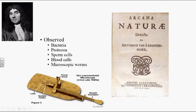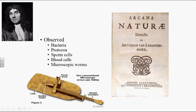That person was Antonie van Leeuwenhoek, a Dutch scientist. Inspired by Robert Hooke's book, he began using a tiny single-lens microscope — with a lens area through which he placed specimens for observation. Using this microscope, he observed bacteria, protozoa, sperm cells, blood cells, and microscopic worms. He worked in a glass factory and also wrote a book documenting his observations.